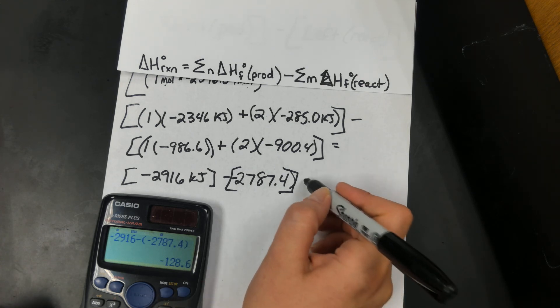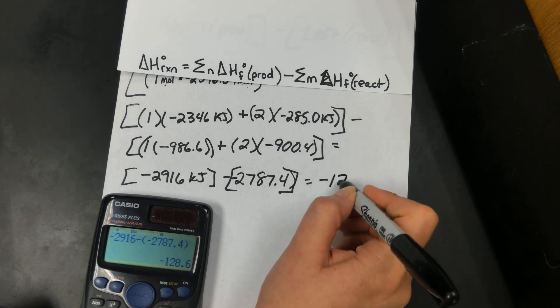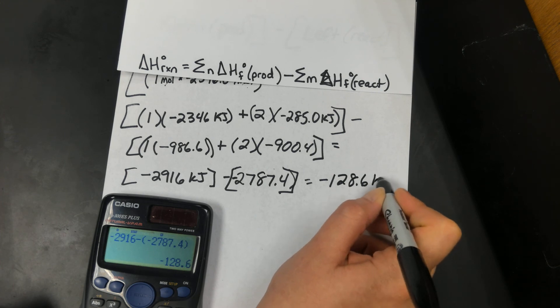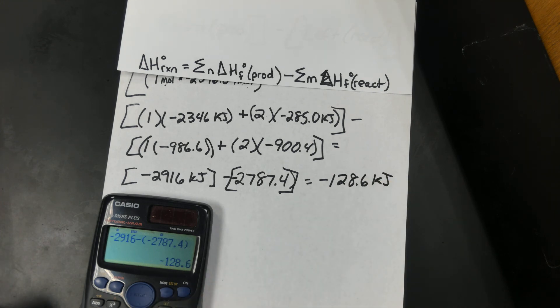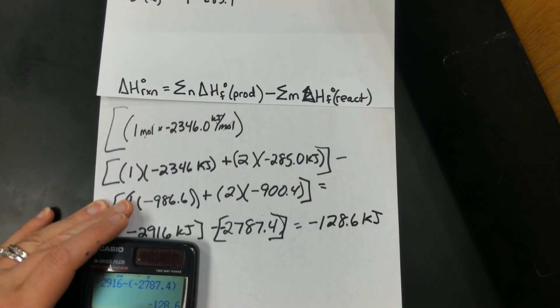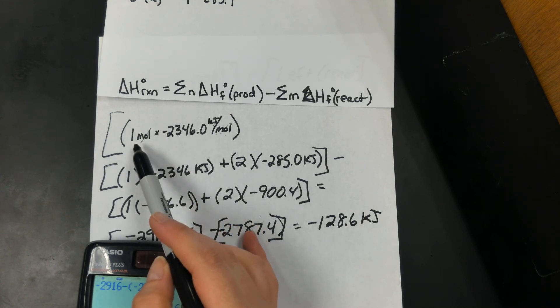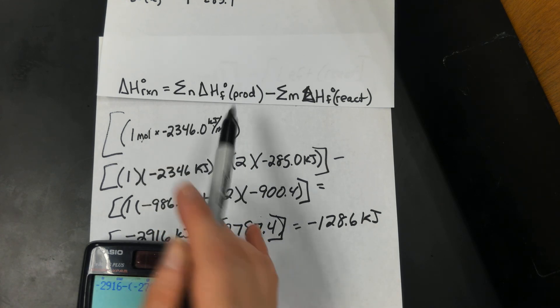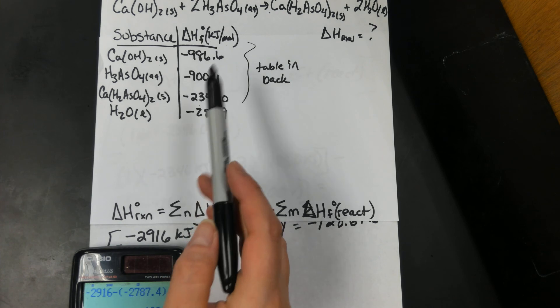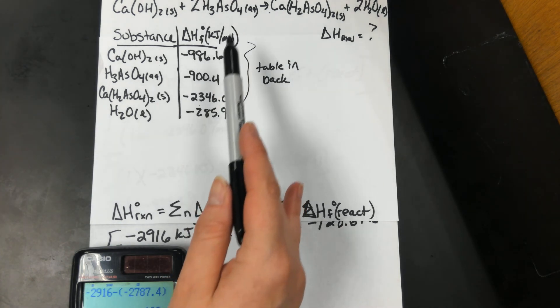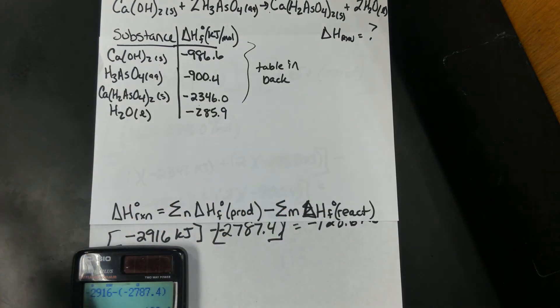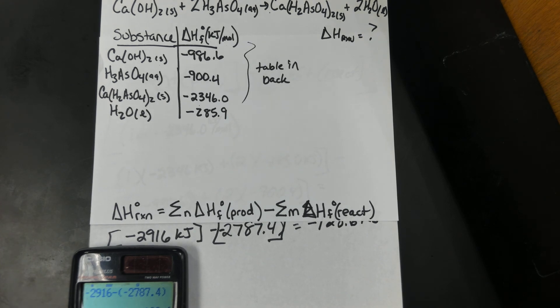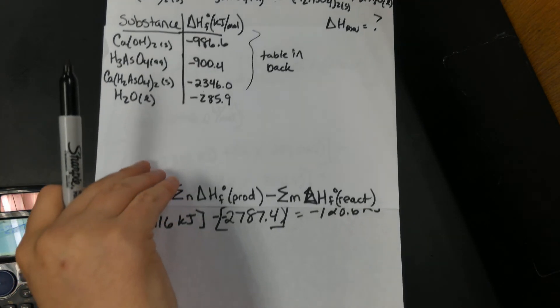Why? Because as I showed us earlier, the coefficients mean moles, and these given enthalpies of formation are in kilojoules per mole. So you essentially took care of the mole part by multiplying by the coefficients in the equation.